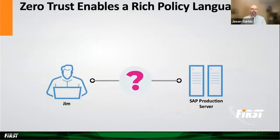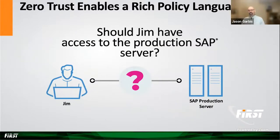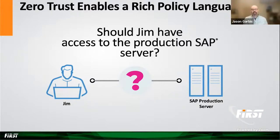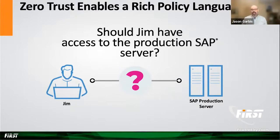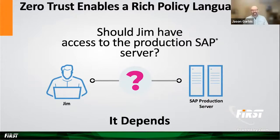The second piece of it is that zero trust enables a much richer, and I would argue far more useful, policy language for expressing authorization. The policy language that a zero trust system presents is the ability to ask a question like: should Jim have access to our production SAP server? That's a really interesting and meaningful question to a lot of people across the business. We know Jim — he has an identity, he has a role in the company. And maybe Jim just should or shouldn't have access to the production server. The other half of it is, this is our SAP production server — so now we know this is production data, it's probably got to be protected, maybe it should only be accessible to people on the finance team. That's a really meaningful question that you can build interesting sets of policies and controls around. And the answer that zero trust enables is: it depends — which is always the right answer to any interesting question.